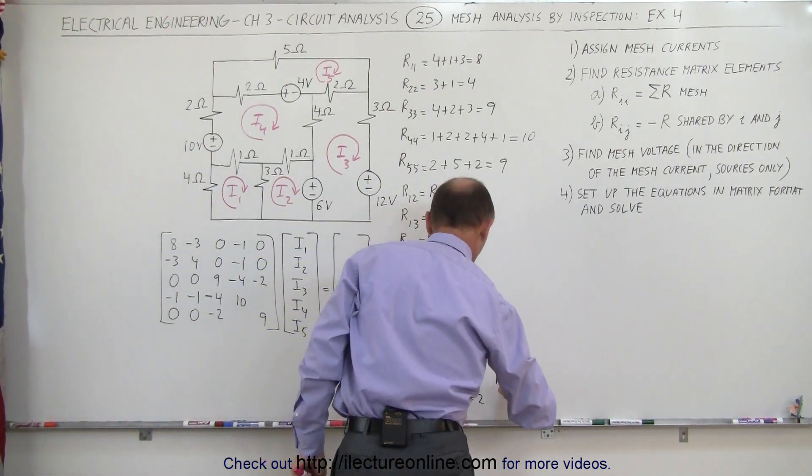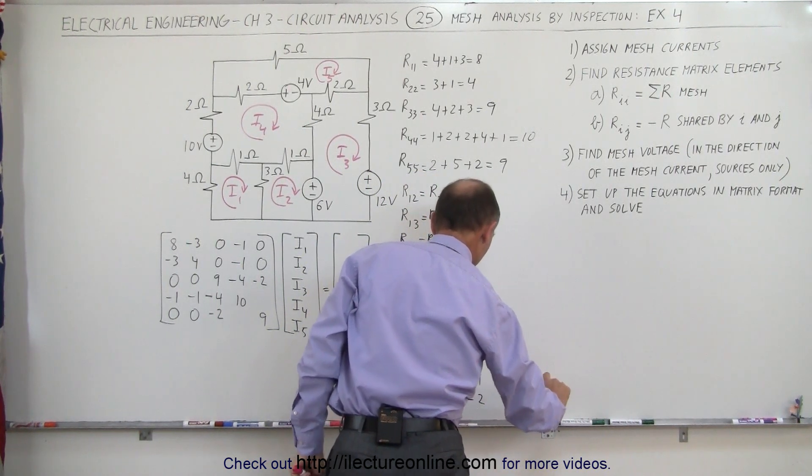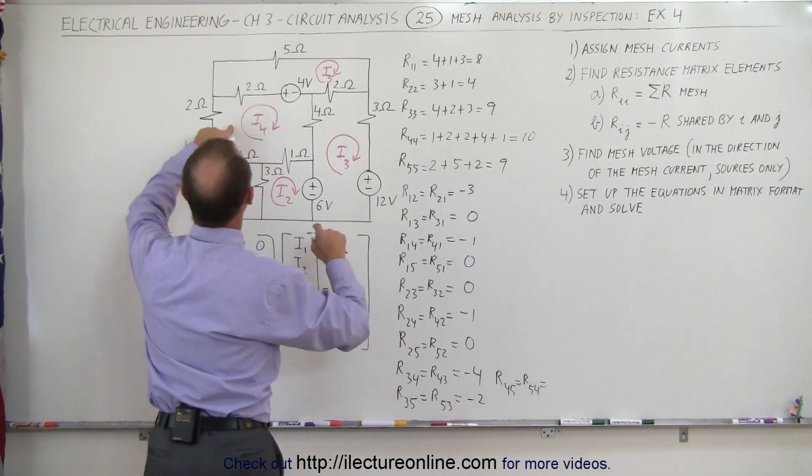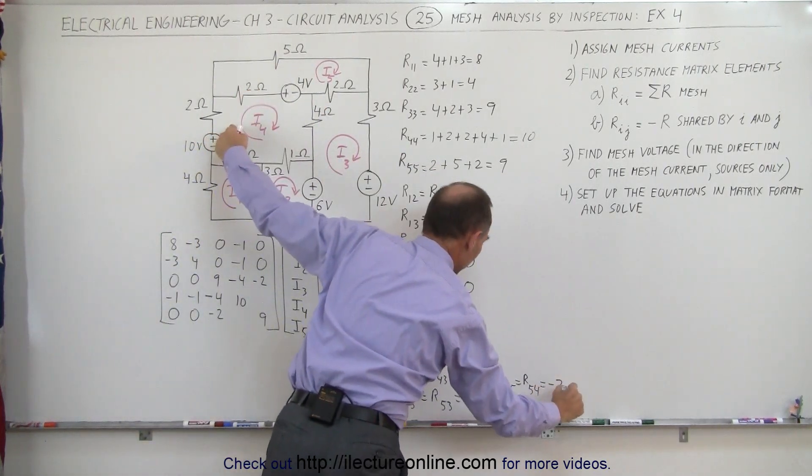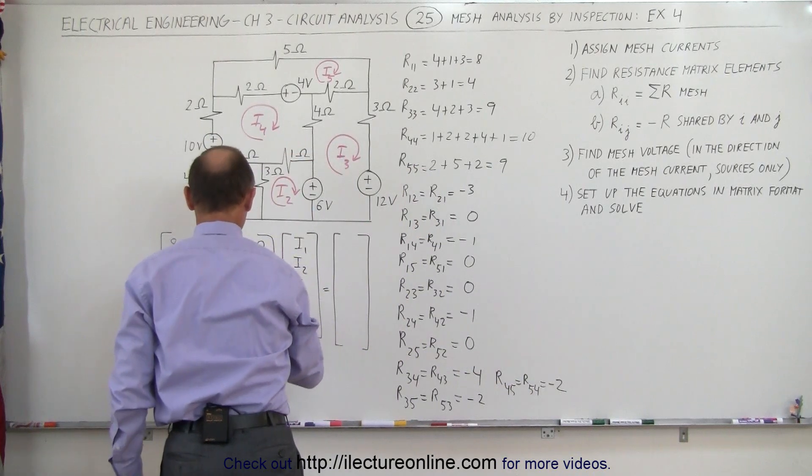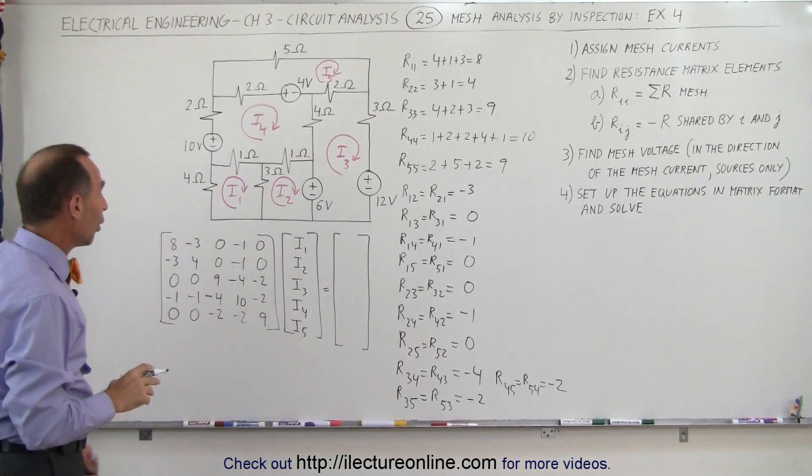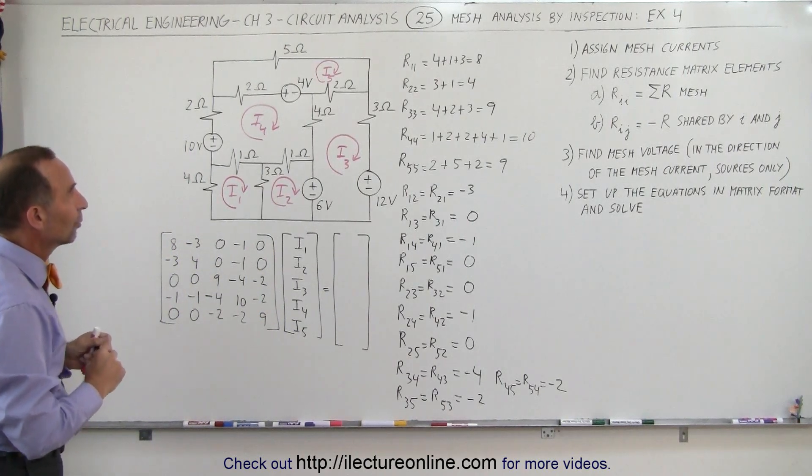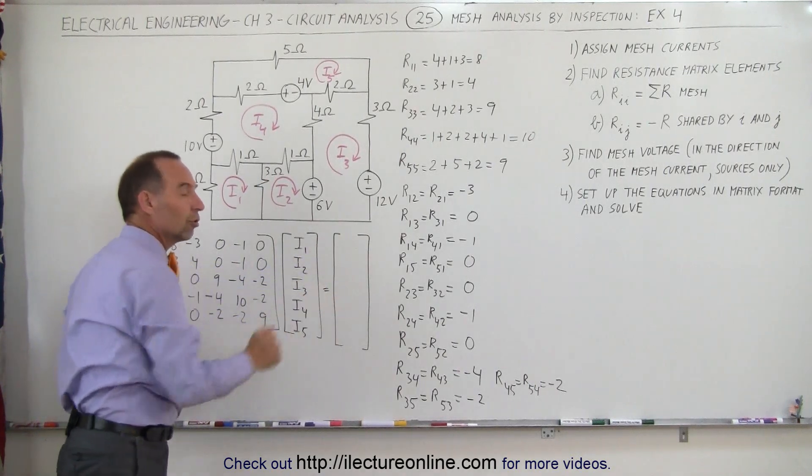And finally, we have R45 equals R54. Between meshes 5 and 4, we do have a 2 ohm resistor in common. That's minus 2. So now we have the matrix with all the resistor values. We call that the resistance matrix. We have the unknown current matrix. Now we need all the voltages.